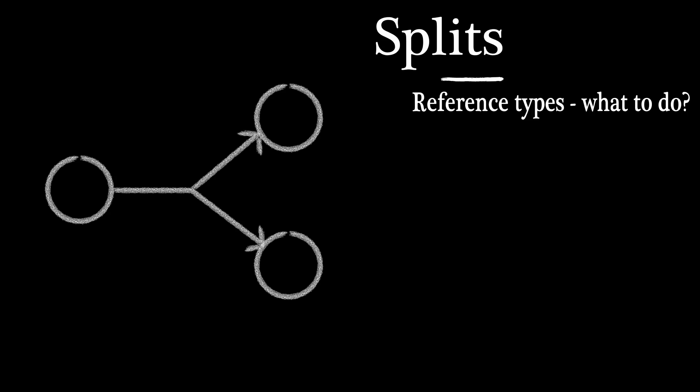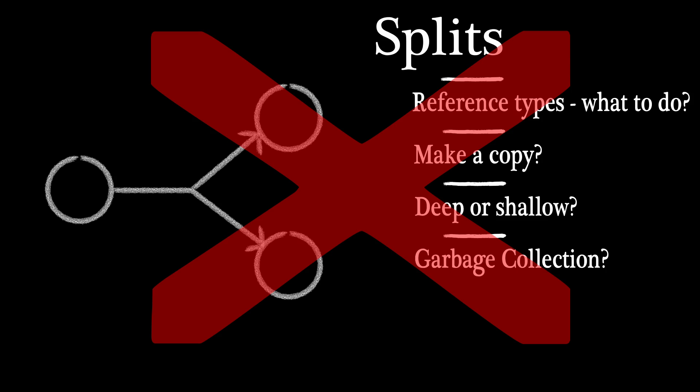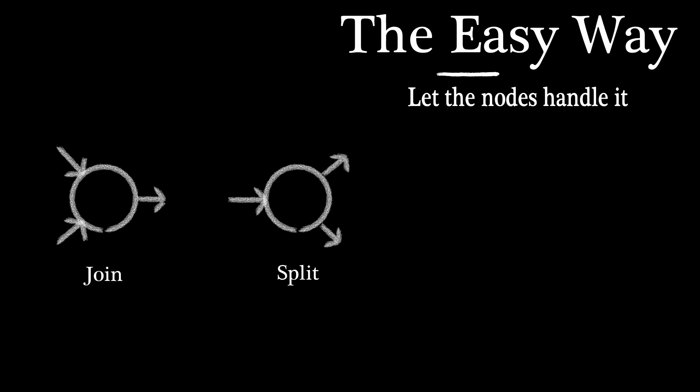Splits also cause problems with reference types. Do you make a copy of the data? Should the copy be deep or shallow? And what about garbage collection? Or we could just punt and disallow them also. The easy way is to defer responsibility to the nodes because they already understand the data format.